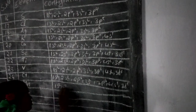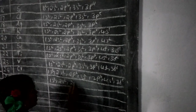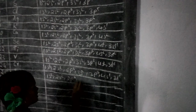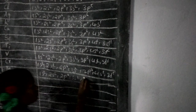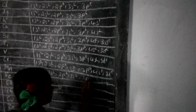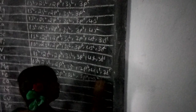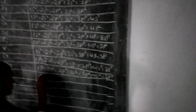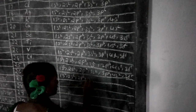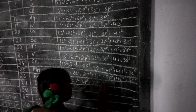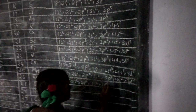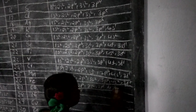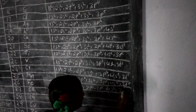1s2, 2s2, 2p6, 3s2, 3p6, 4s2, 3d5. 1s2, 2s2, 2p6, 3s2, 3p6, 4s2, 3d6.